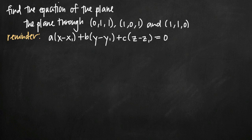Today we're going to be talking about how to find the equation of a plane. In this particular problem, we've been asked to find the equation of the plane which passes through three coordinate points: (0,1,1), (1,0,1), and (1,1,0). We've been given three coordinate points, and we know that each of these points lies in the plane. We just need to find the equation of that plane.